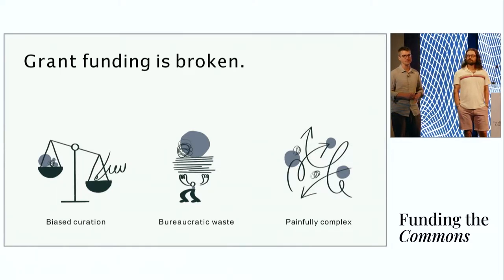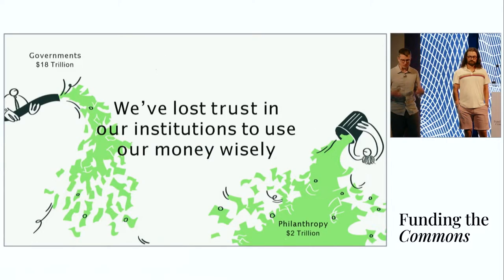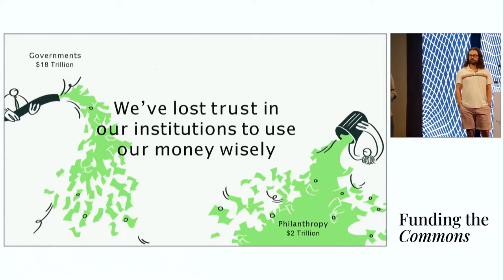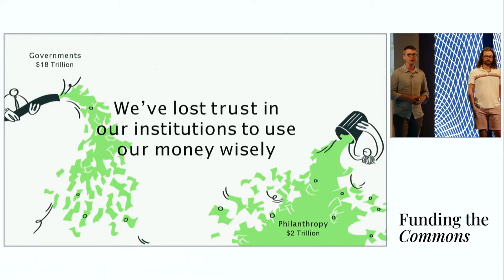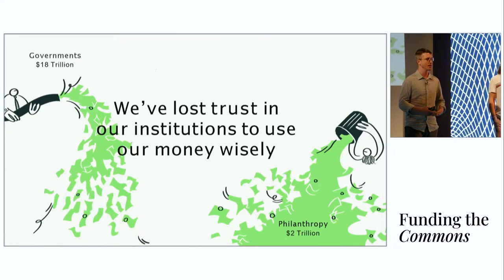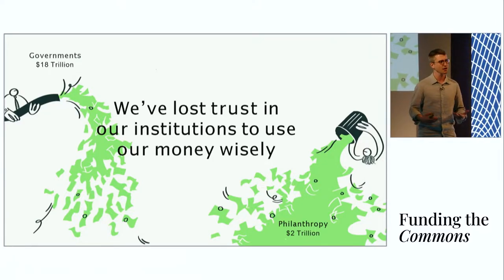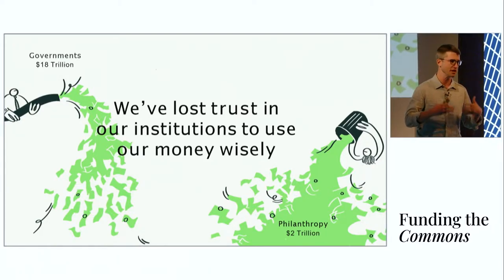But we also discovered that everything else about grant funding is pretty broken. First of all, it's highly biased. The vast majority of funding goes to just the top 1% of creators. It's highly bureaucratic, that means a lot of waste. And finally, it's really complex for everyone involved. And the truth is we've really lost trust in our institutions to use our money wisely.